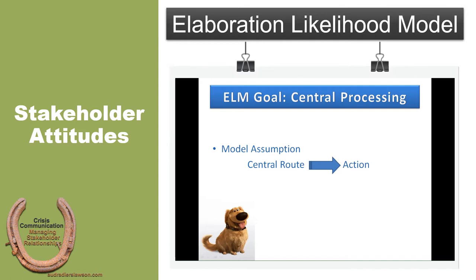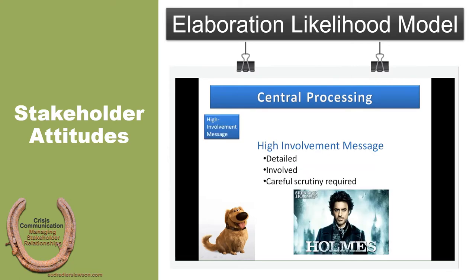How that persuasion happens is through the model's steps. Let's look at central processing, starting there. We begin with a high involvement message. In the central route, that's what we're most interested in. If someone is centrally processing, they are looking for messages that are detailed, involved, and require careful scrutiny. The more engaged we are, the more attention we're paying. If you craft a high involvement message for a persuasive campaign, you are trying to get people to read more, pursue more information, and really investigate it to its fullest potential.